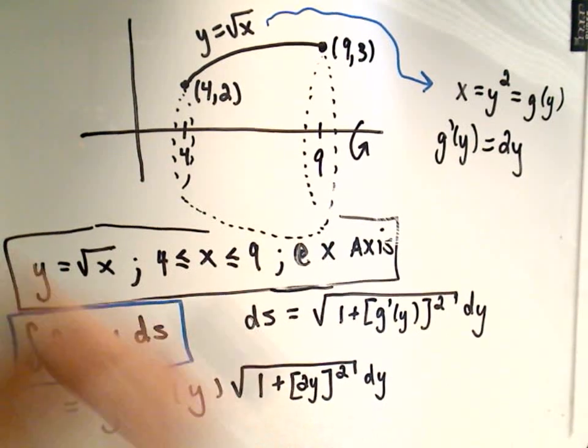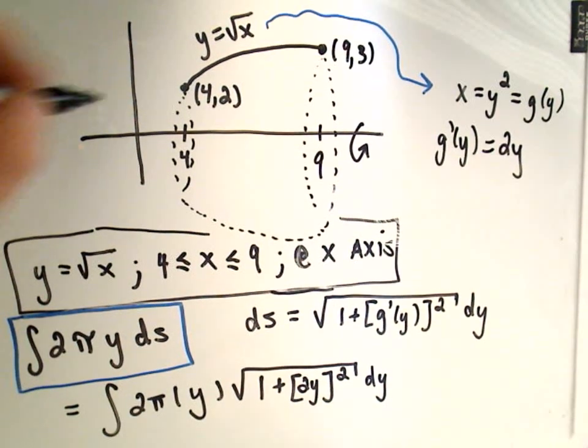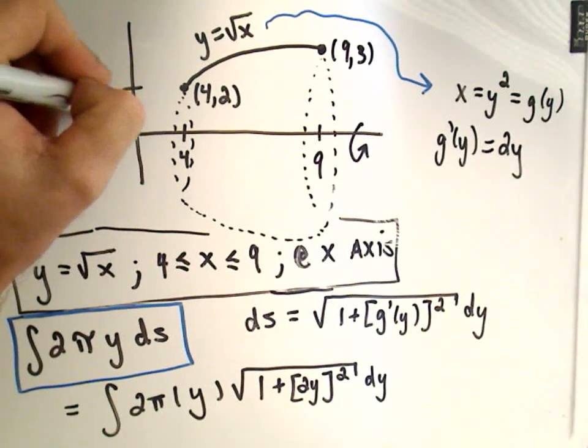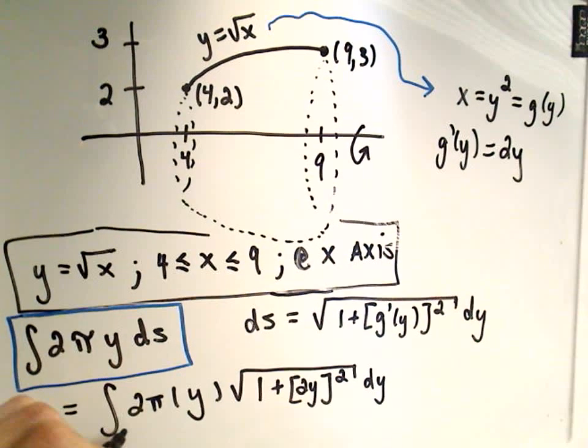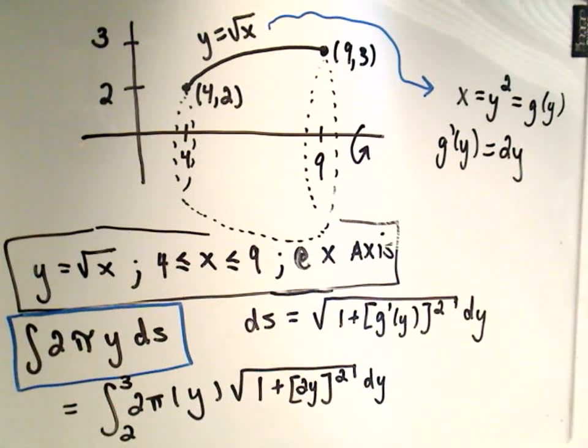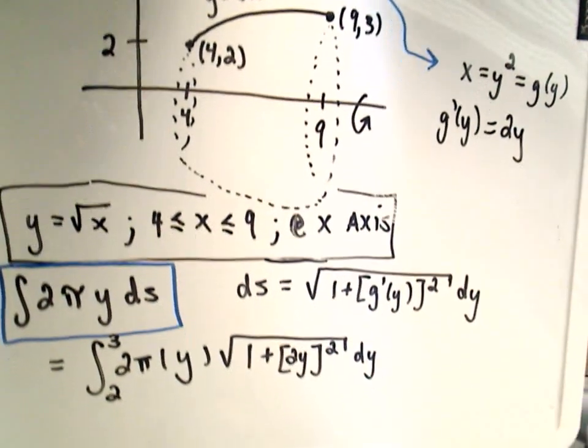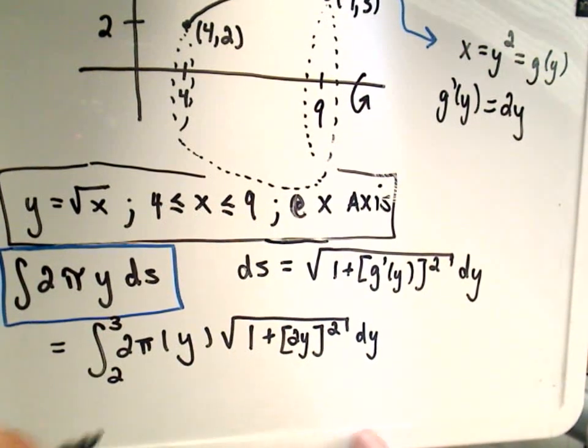Okay, well, now that we're integrating with respect to y, our limits of integration also come from the y-axis. So the smallest y-coordinate is 2, the largest y-coordinate is 3, those become the limits of integration. And now it's simply a matter of calculating this integral.